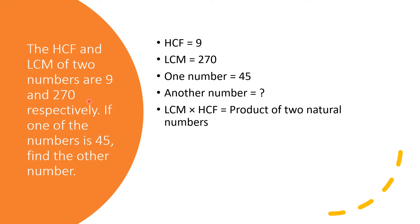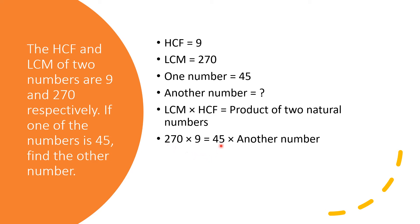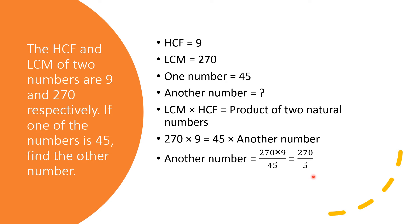Using the relation HCF × LCM = product of two natural numbers: 9 × 270 = 45 × other number. To find the other number, transfer 45 to the other side as division: other number = (270 × 9) ÷ 45. Nine fives are 45, so this becomes 270 ÷ 5 = 54. The other number is 54.